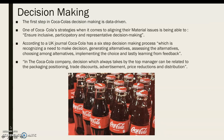Decision-making: The first step in Coca-Cola's decision-making is data-driven. One of Coca-Cola's strategies when it comes to aligning material issues is ensuring inclusive, participatory, and representative decision-making. According to a UK journal, Coca-Cola has a six-step decision process whenever it comes to making new decisions. The Coca-Cola company's decisions, which are always taken by the top manager, can be related to packaging, positioning, trade discounts, advertisement, price reductions, and distribution.